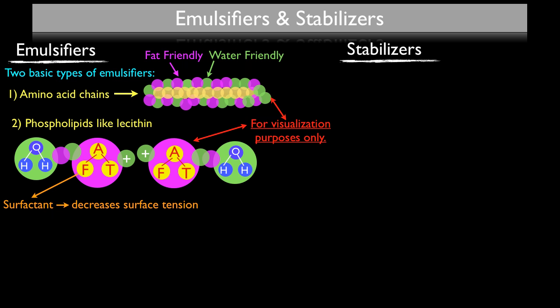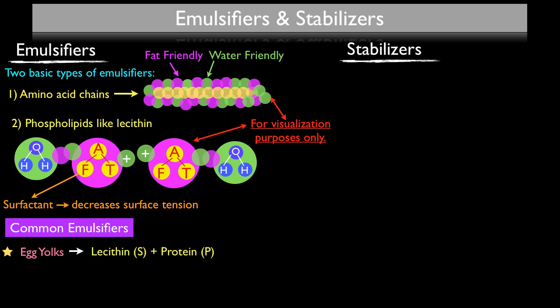These little doodles are for visualization purposes only — not really what an amino acid chain or lecithin looks like, but just to illustrate how amino acids, phospholipids, and surfactants work as emulsifiers. Common emulsifiers you'll encounter include egg yolks, found in hollandaise, aioli, and mayonnaise. Egg yolks are extremely powerful emulsifiers because they contain lecithin, which is a surfactant, and also casein protein, made up of amino acids with both fat-friendly and water-friendly receptors. This is the same deal with milk and cream, which also contain a decent amount of casein protein that can be used as an emulsifier.